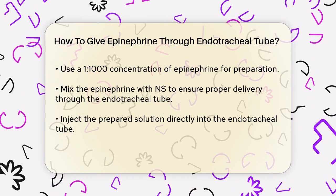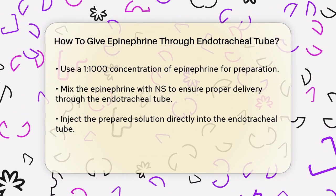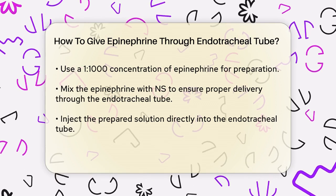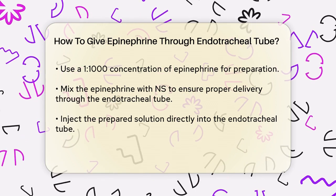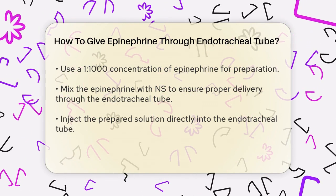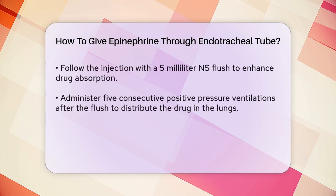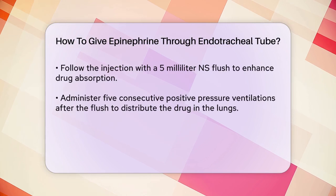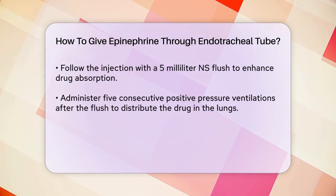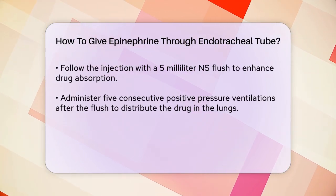After the flush, perform 5 consecutive positive pressure ventilations to help distribute the epinephrine throughout the lungs. This step is vital for ensuring the drug reaches the bloodstream effectively.